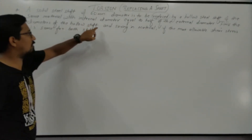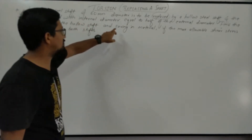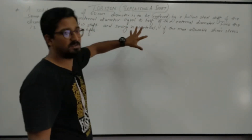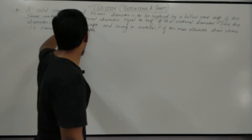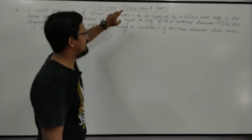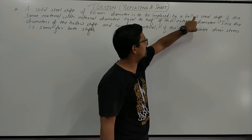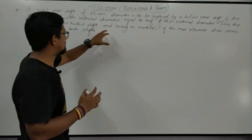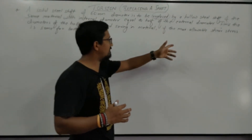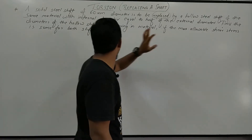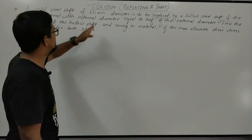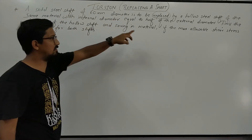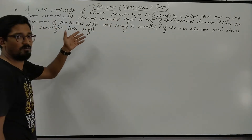We have to find the diameters of the hollow shaft and the percentage saving in material — how much percentage is saved because earlier the shaft was solid and now it is replaced by a hollow one. The maximum allowable shear stress is the same for both shafts since the material is the same, so tau for solid equals tau for hollow.